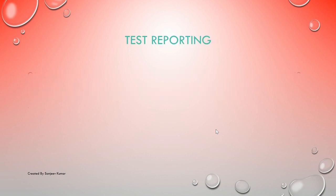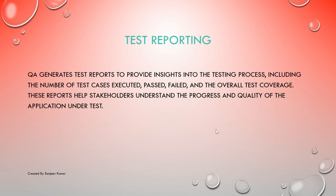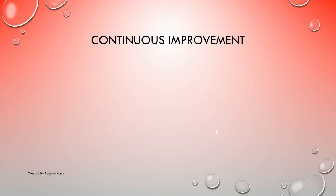For test reporting — QA generates test reports to provide insights into the testing process, including the number of test cases executed, passed, failed, and overall test coverage. These reports help stakeholders understand the progress and quality of the application under test. Apart from daily reporting, as a QA you must maintain a master reporting sheet tracking how many test cases were executed, the count of bugs or feedback, and the overall project status, so any stakeholder can refer to it at any time to know the exact status.